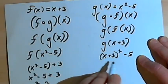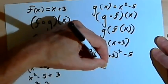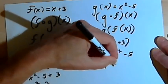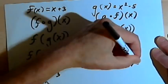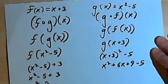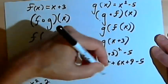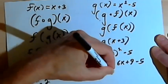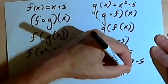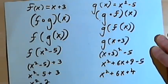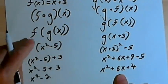My g of x function tells me to take whatever I have inside these parentheses and square it and subtract 5. So I'm going to take this x plus 3 and square it and subtract 5. So let's square x plus 3, that's like x plus 3 times x plus 3. If we follow that out, we're going to get x squared plus 6x plus 9 minus 5. And then we'll combine this 9 and negative 5, so I'll have x squared plus 6x plus 4. Very different answer than what I got for f of g of x.